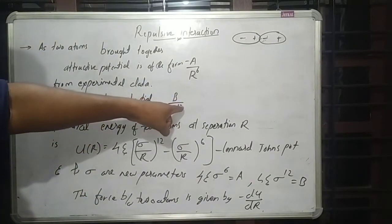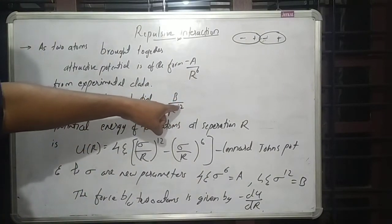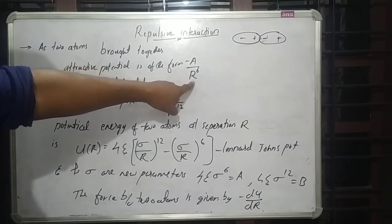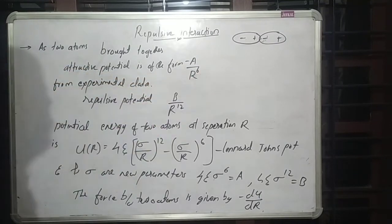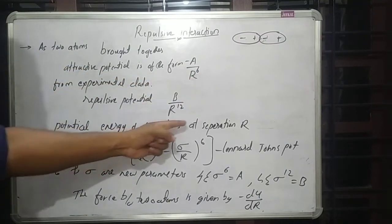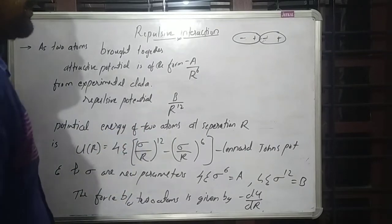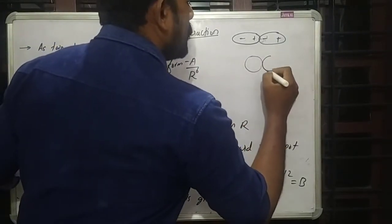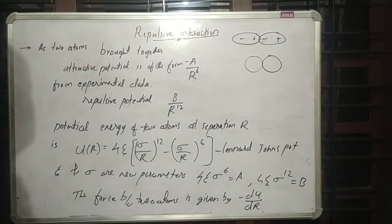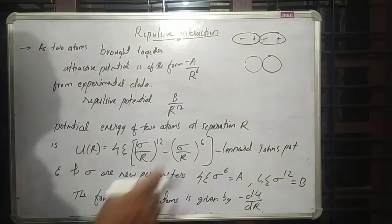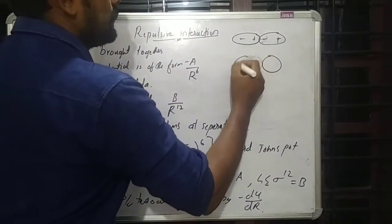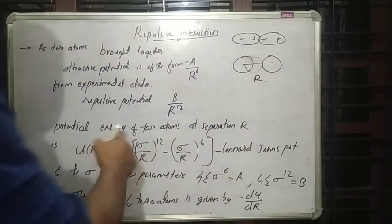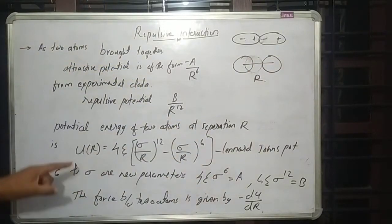That repulsive interaction energy is proportional to 1 over R raised to 12, and is less than the attractive potential. The total potential energy of two atoms at separation R combines both terms.